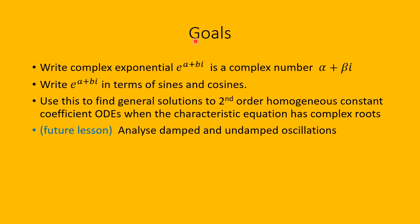The goals of this lesson are to write the complex exponential e to the a plus bi as a complex number alpha plus beta i, and to write this complex exponential in terms of sines and cosines. We'll use this idea to find general solutions to a second-order homogeneous constant-coefficient ODE when the characteristic equation has complex roots. Then, in the next lesson, we will use this to analyze damped and undamped oscillations in mechanical systems.